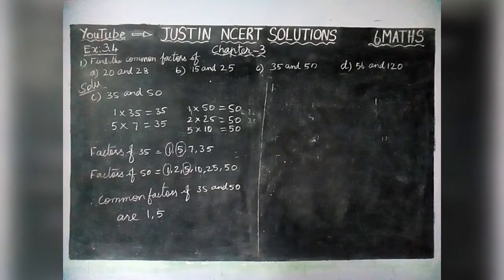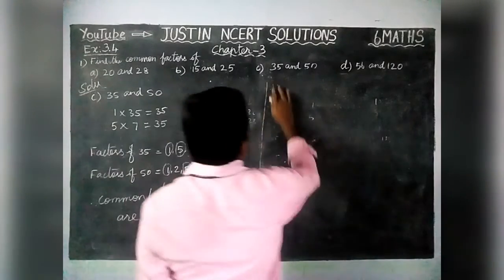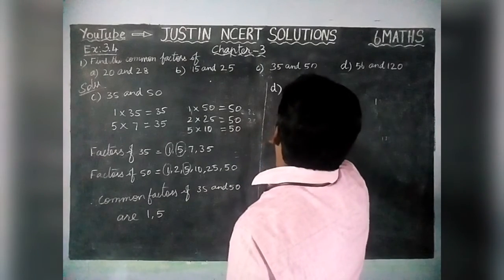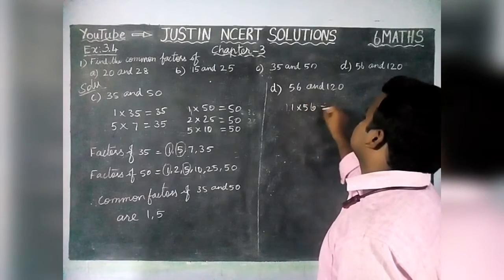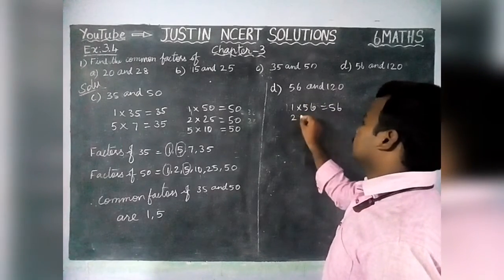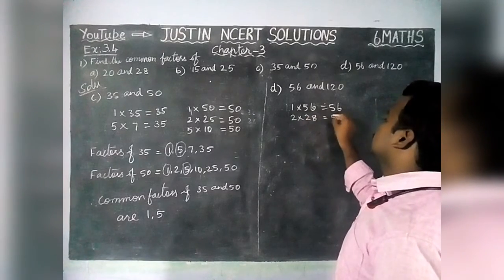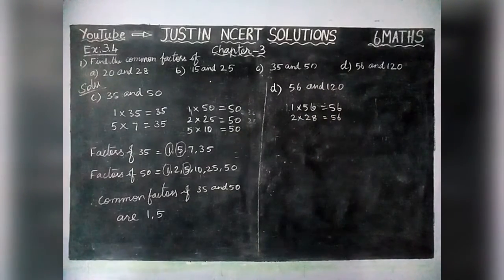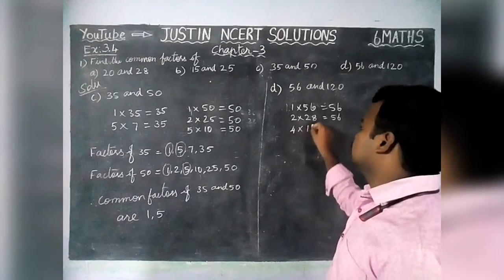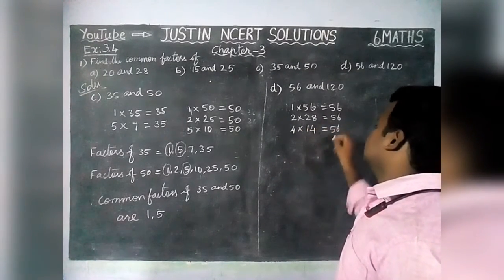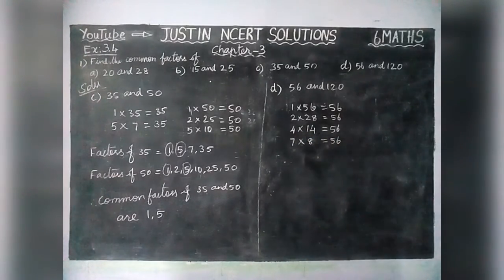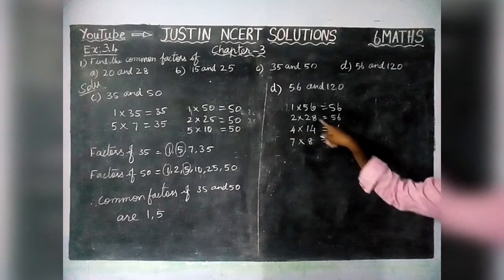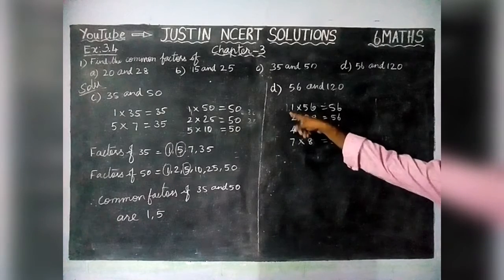Next, we are going to find all the factors of 56 and 120, after that we will find all the common factors. Option D: 56 and 120. 1×56 is 56, 2×28 is 56, 3 will not come, 4×14 is 56, 5 will not come, 6 will not come, 7×8 is 56. We don't have any other factors of 56.